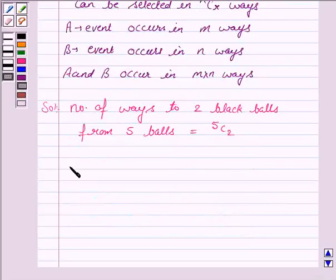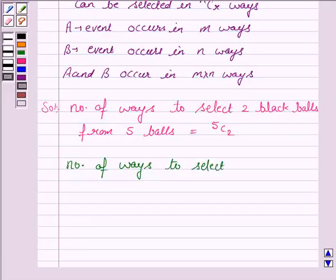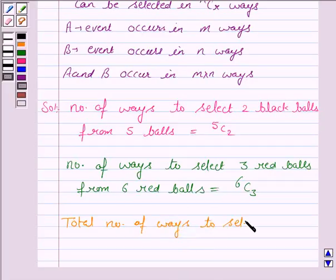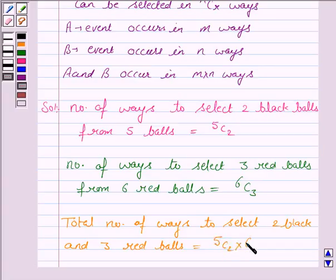And the number of ways to select 3 red balls from 6 red balls is 6C3. Now, the total number of ways to select 2 black and 3 red balls is equal to 5C2 into 6C3.